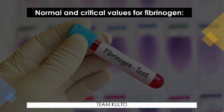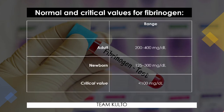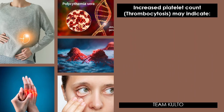Now let's discuss fibrinogen normal values. For adults, the normal range is 200 to 400 milligrams per deciliter. For newborns, it's 125 to 300 milligrams per deciliter. The critical value for fibrinogen is less than 100 milligrams per deciliter — nurses, take note of this, it's very important.